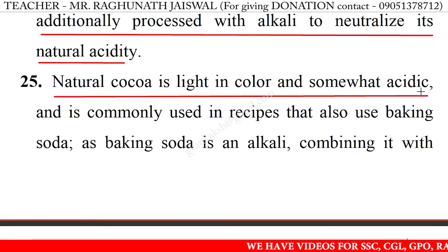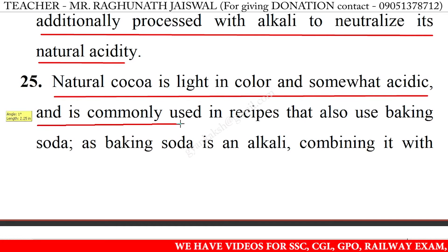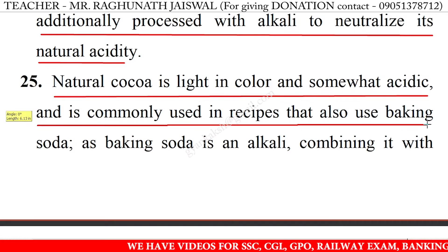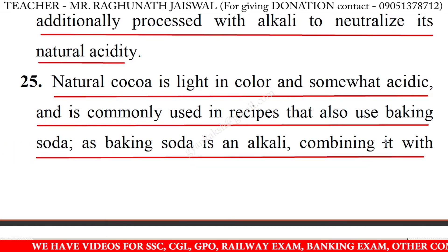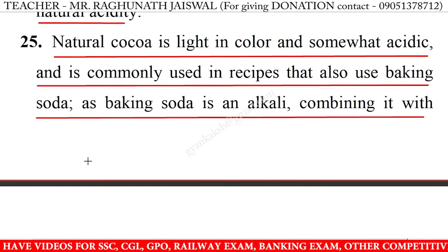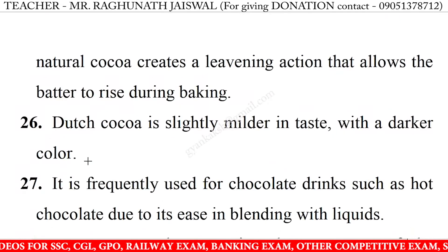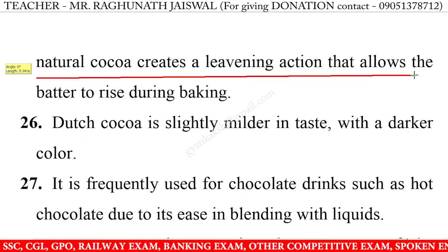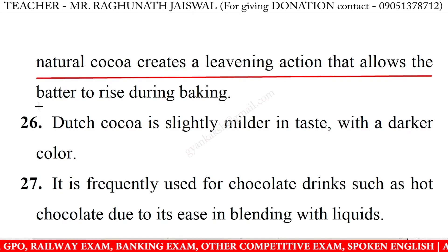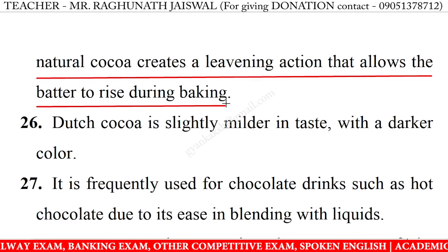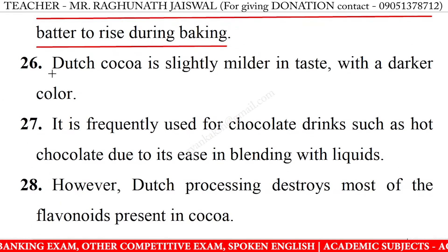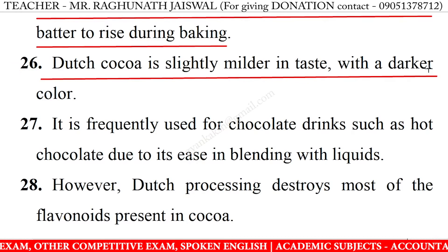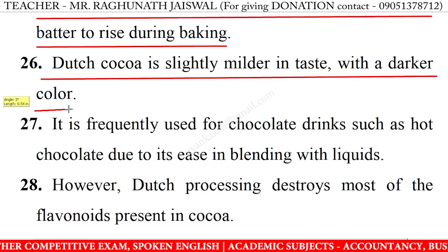Natural cocoa is light in color and somewhat acidic, and is commonly used in recipes that also use baking soda, as baking soda is an alkali. Combining it with natural cocoa creates a leavening action that allows the batter to rise during baking. Dutch cocoa is slightly milder in taste with a darker color.